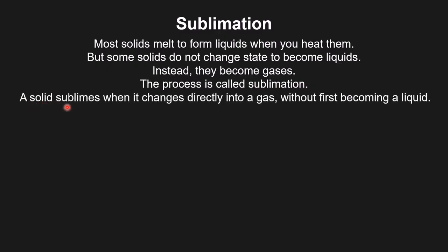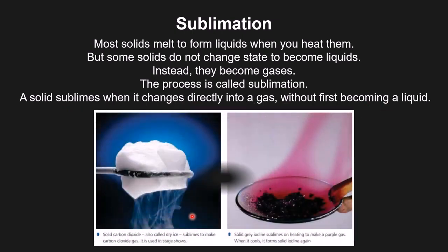A solid sublimes when it changes directly into gas without first becoming a liquid. A common example is solid carbon dioxide, also known as dry ice, used in stage shows and rock concerts. If you leave solid carbon dioxide out, it starts turning into gas directly — the particles are squeezed together but then start spreading out. Another example is solid gray iodine: when heated, the gas escapes, but when it cools again, it returns to solid form.